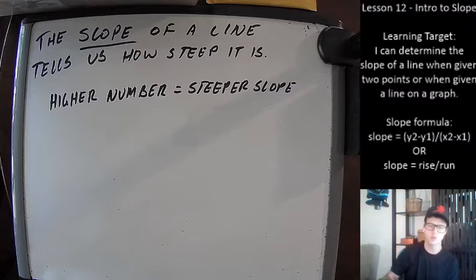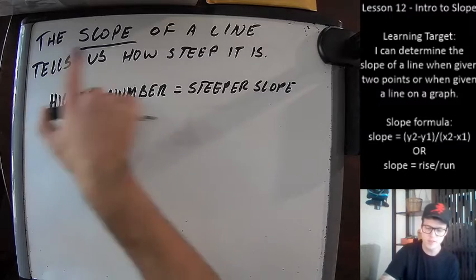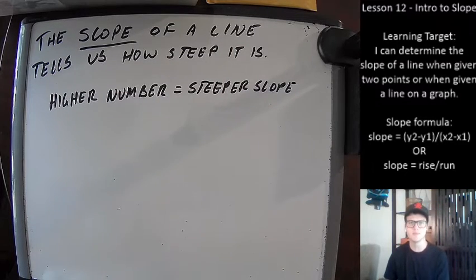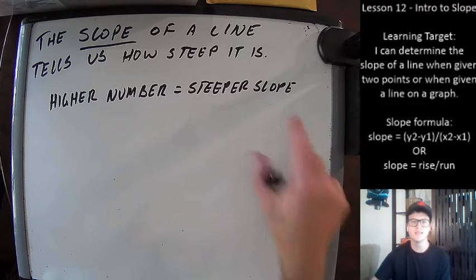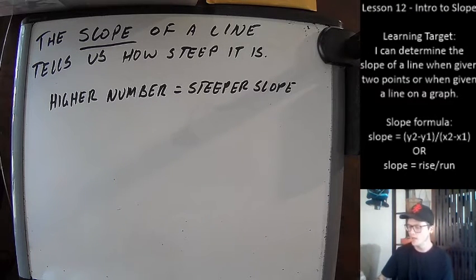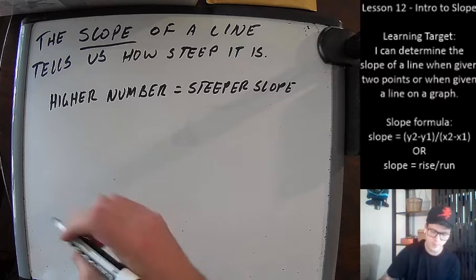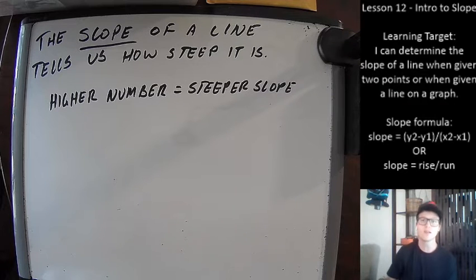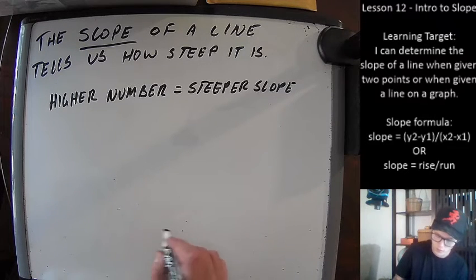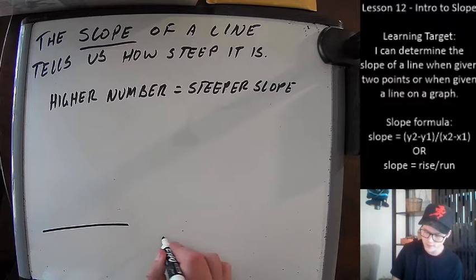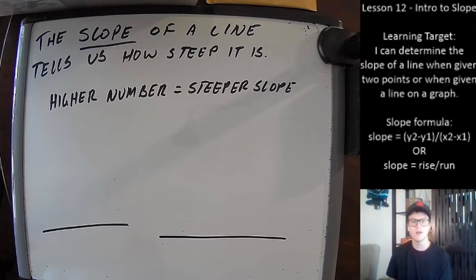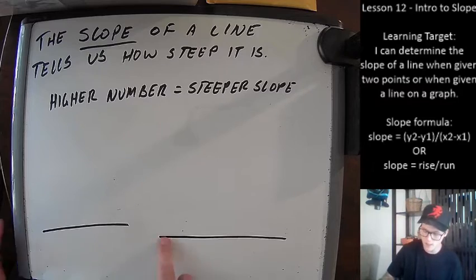First things first — what the heck is slope? The slope of a line tells us how steep it is. A higher number for your slope means it is going to be steeper. As a quick example: if I'm going for a hike and I don't feel like working super hard, I want to go up a hill that looks like this, or even a flat hike — I'll take that all day long. That's not super hard to traverse.